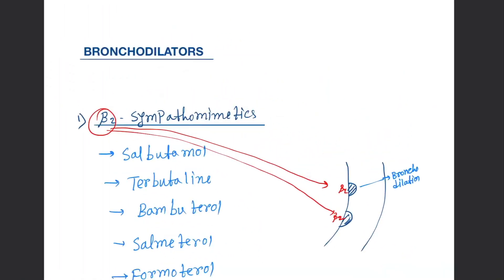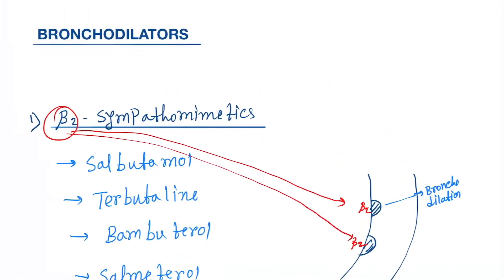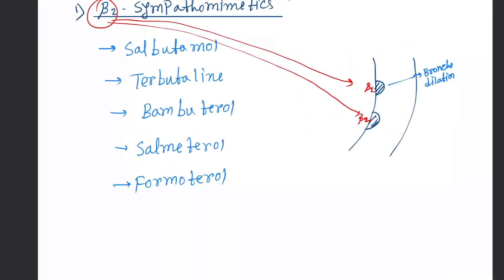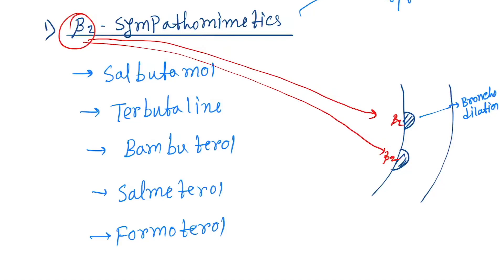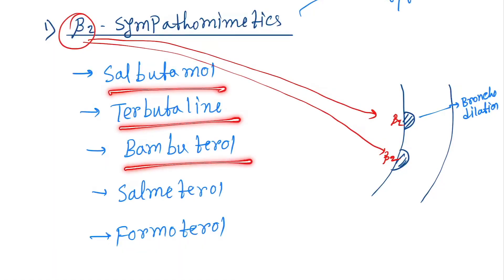Bronchodilation — now understand this is a symptomatic treatment, not the actual treatment, because the actual cause is the immune response. The drugs under beta-2 sympathomimetics are salbutamol, terbutaline, bambuterol, salmeterol, and formoterol.